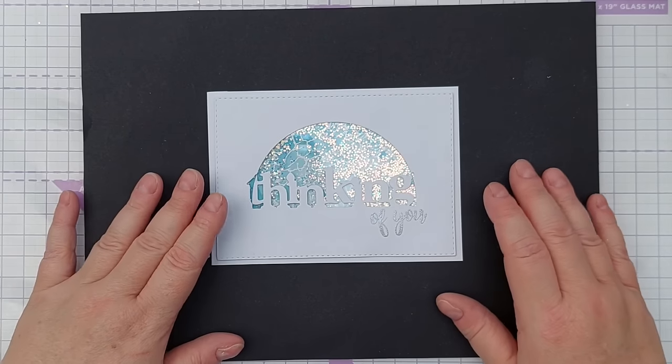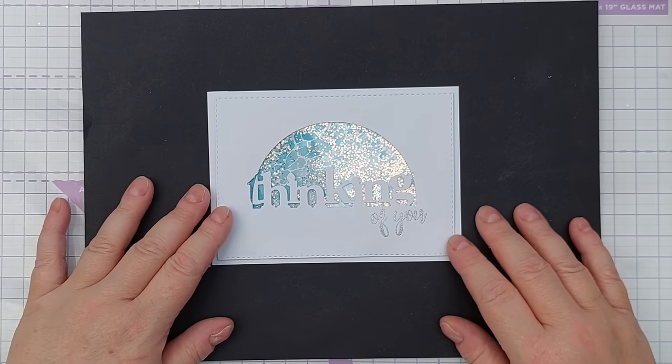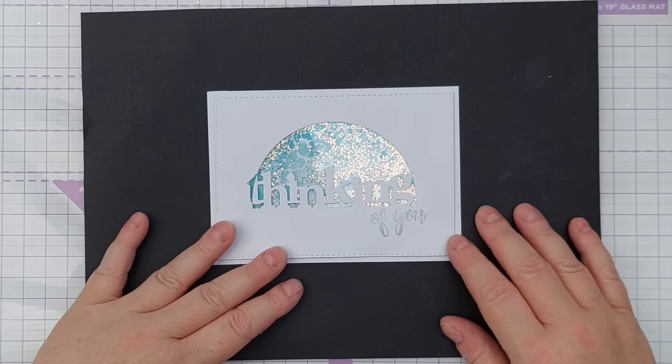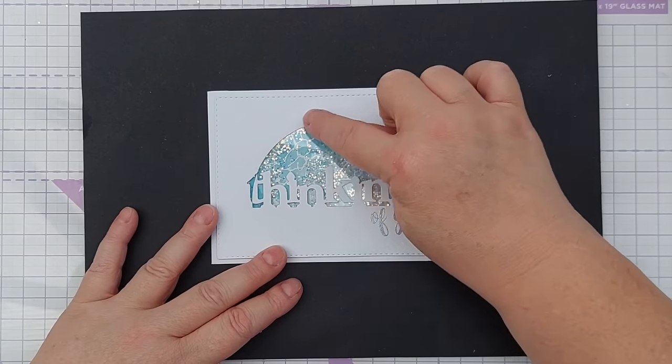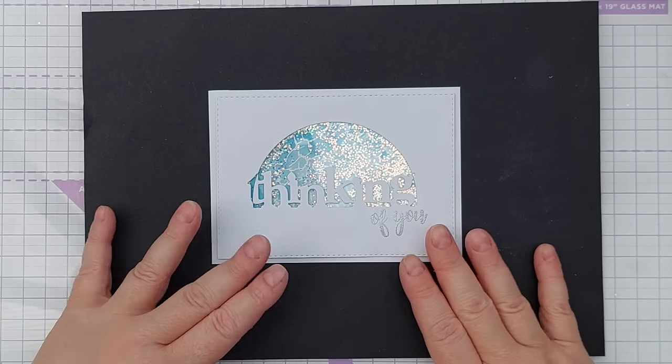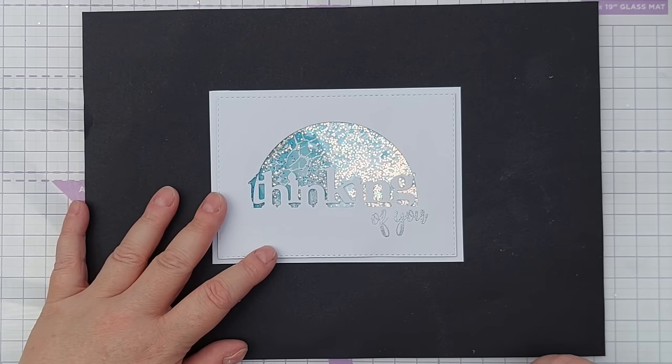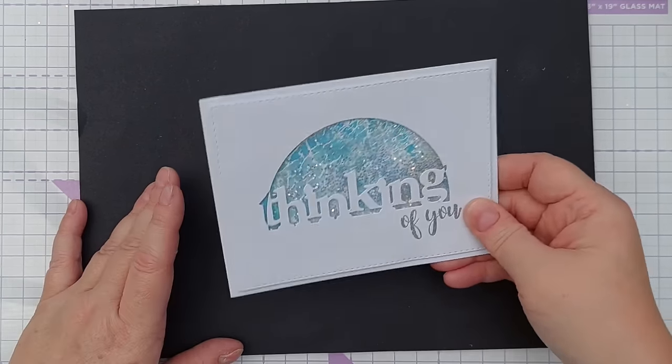There we have a very clean and simple shaker card. Obviously you could embellish that to your heart's content if it was too clean and simple for you. You could add maybe some stitching around the outside, use a different kind of shape, you could add some flowers, maybe some silver flowers or something up there, but that is very clean, very simple, but still interactive and conveys its message.